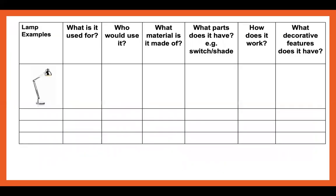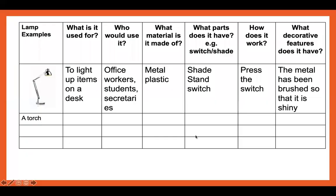Fill out this form using examples from the slides. Here's an example using a lamp: what is it used for — to light up items on a desk; who would use it — office workers, students, and secretaries; what material is it made from — metal and plastic; what parts does it have — a shade, a stand, and a switch; how does it work — press the switch; what decorative features does it have — the metal has been brushed so it is shiny, giving a chrome effect.